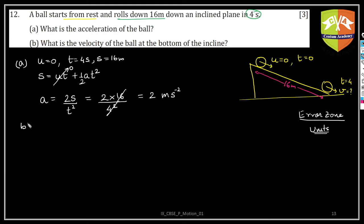Second part is, what is the velocity of the ball at the bottom of the incline? So now that A is known, you can use the third equation of motion which is V squared is equal to U squared plus 2AS.